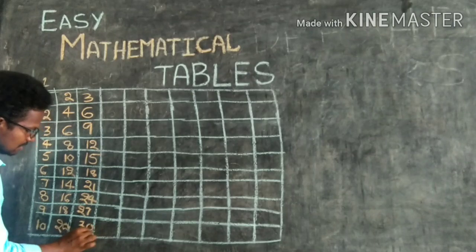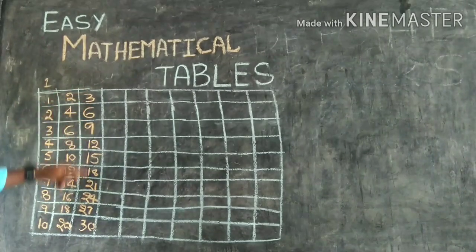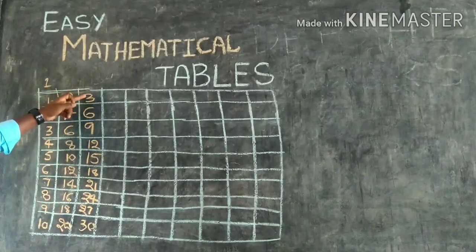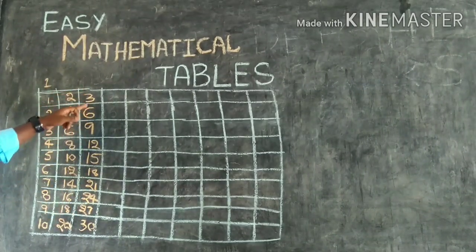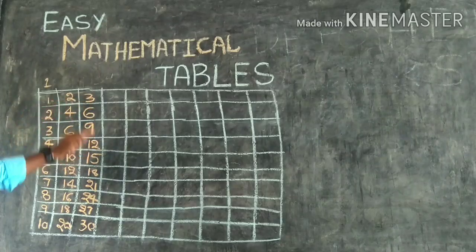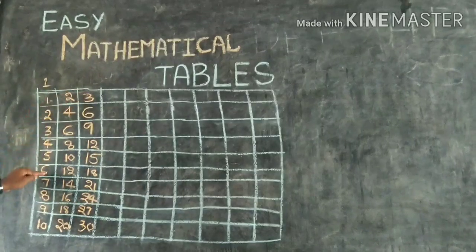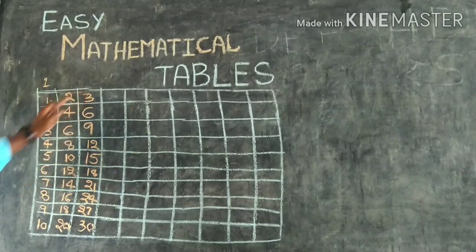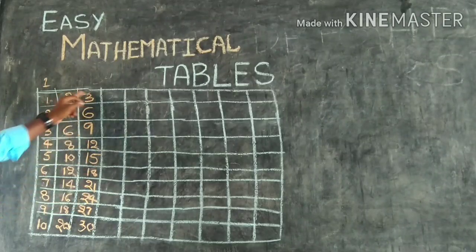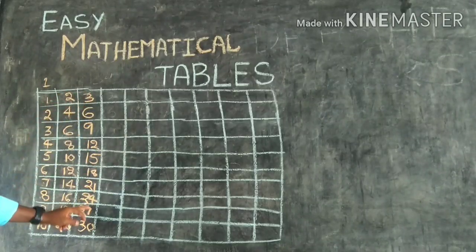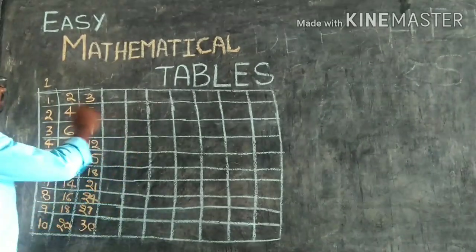You see, this is the third table. 3 times 1 is 3, 3 times 2 is 6, 3 times 3 is 9, 3 times 4 is 12, 3 times 5 is 15, 3 times 6 is 18, 3 times 7 is 21, 3 times 8 is 24, 3 times 9 is 27, 3 times 10 is 30.